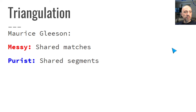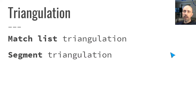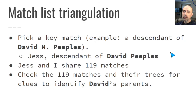Maurice Gleason did a presentation that I found online, and I thought it was interesting because of the way he described the two different kinds of triangulation. When he talks about shared matches triangulation, he refers to it as 'messy triangulation.' When he talks about shared segment triangulation, he uses the term 'purest triangulation.' For me, I say 'matchlist triangulation' when people are talking about going through shared match lists to find shared ancestry, and I use the term 'segment triangulation' to talk about the process where we're looking more directly at the DNA to find shared ancestry.